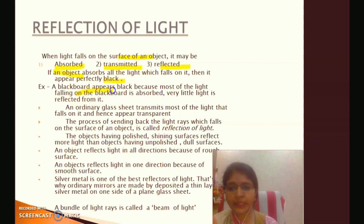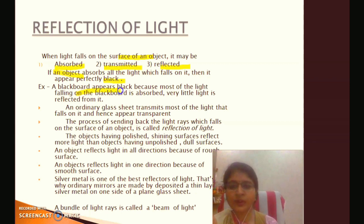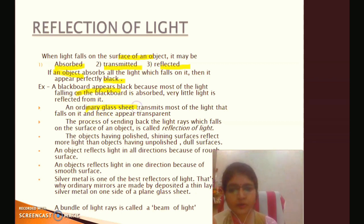Even our school blackboard: light will reflect slightly from it, but the blackboard absorbs most of the light in a very low quantity of reflection. An ordinary glass sheet, when we put light on it, allows the light to pass through — that is why the sheet is transparent. This is called transmission.